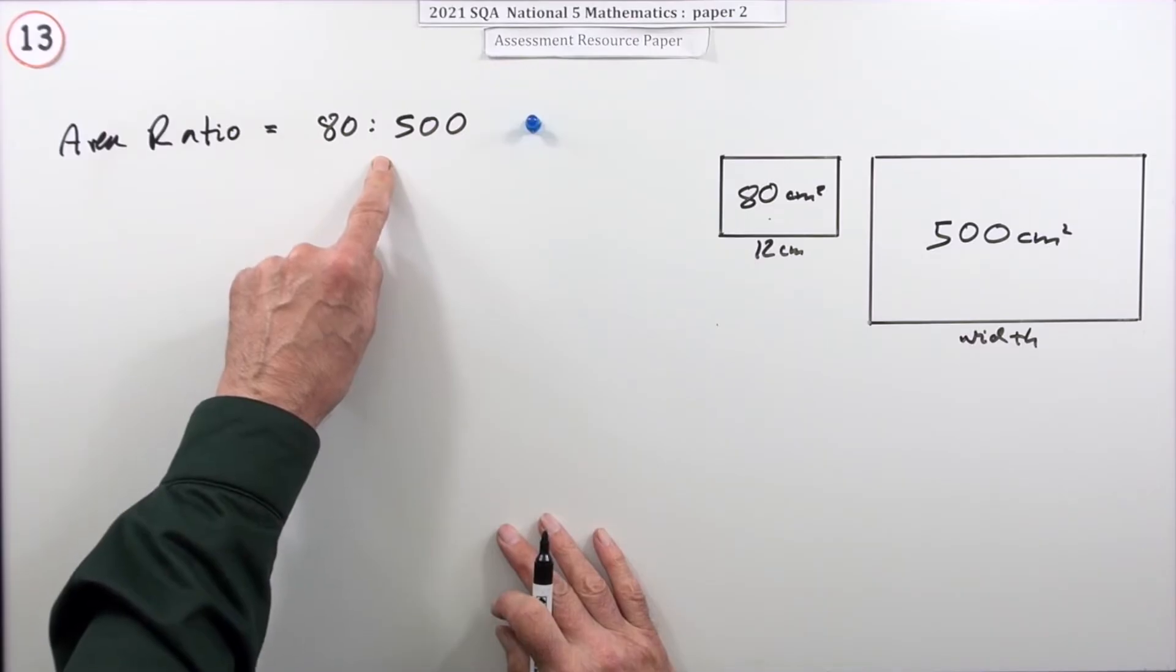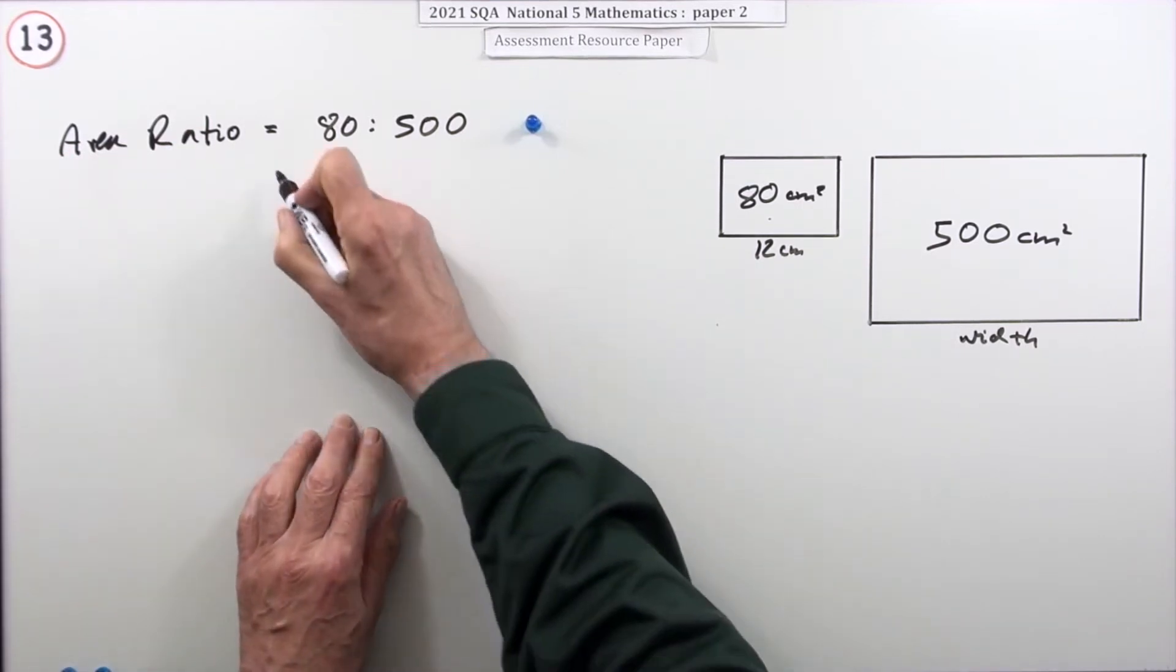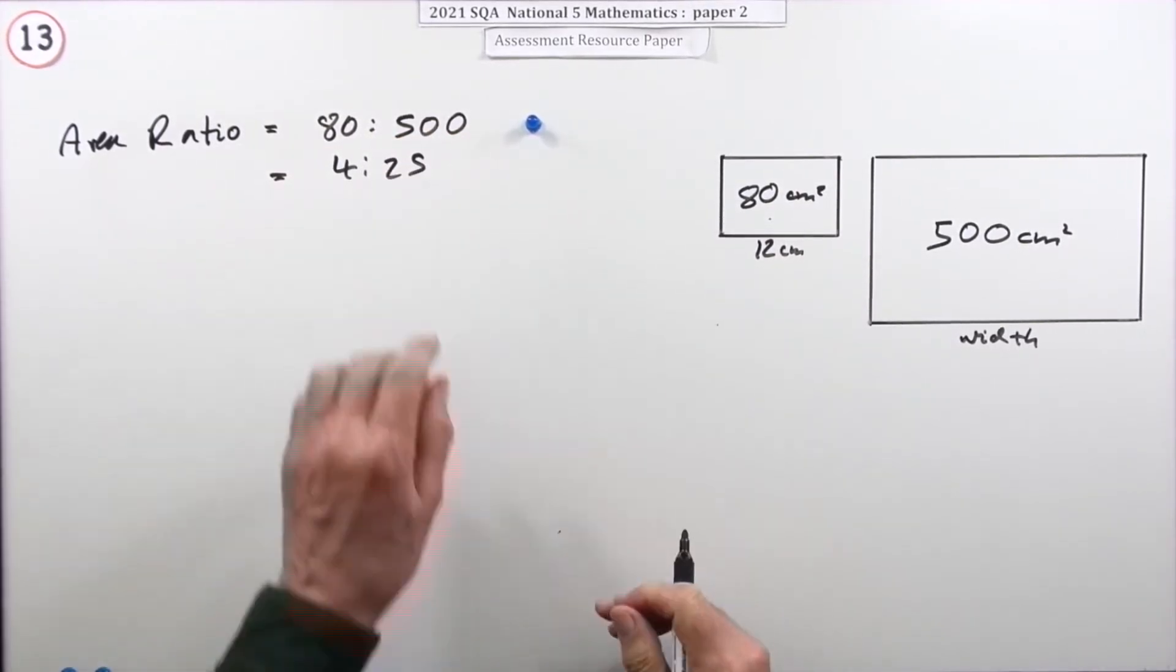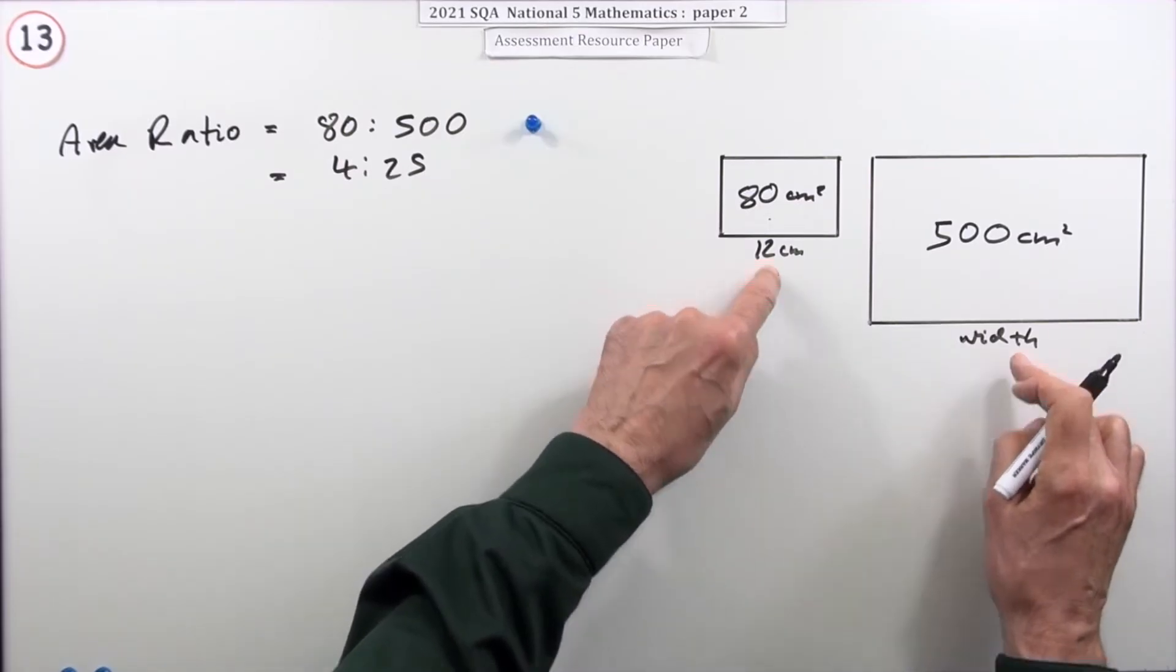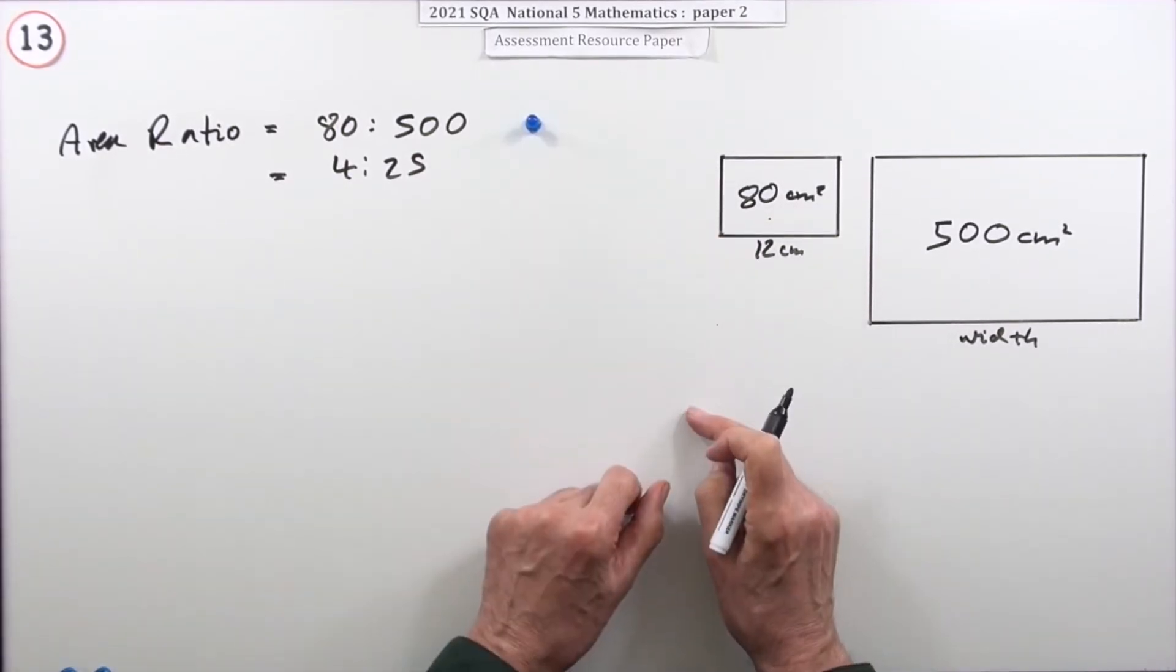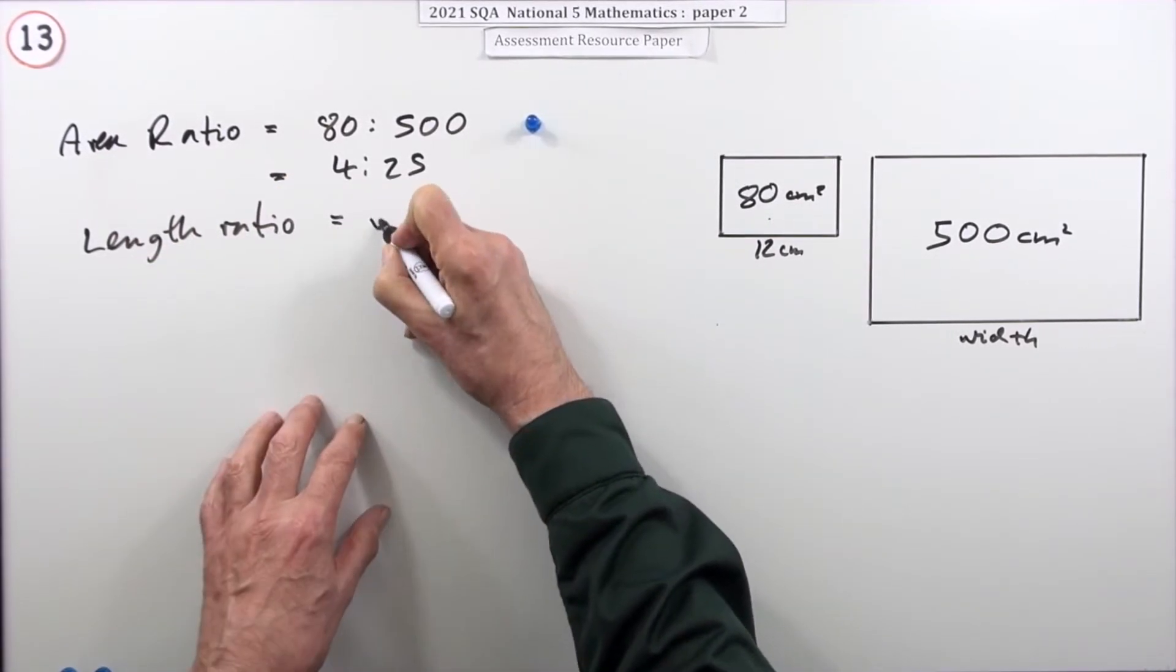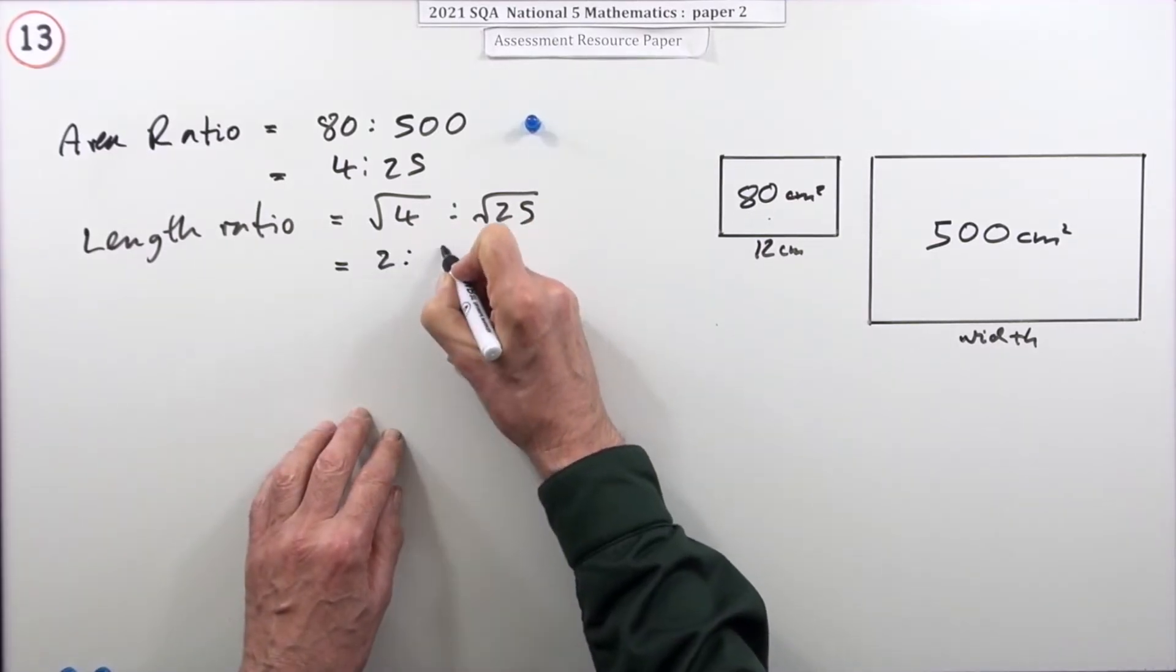At that point you could simplify it, but it is paper 2, so it is a calculator, so you could just leave all the numbers like that. But I would have knocked that down because it can come down quite a lot - divide by 10 makes it 8 and 50, then to 4 and 25, which is really very handy. There was no mark for doing that because it was a calculator paper. Now there's a connection between the area ratio and the length ratio. To get an area you multiply a length by a length, so the area will be multiplied by the square. From the area ratio you can get the length ratio by taking the square root. The length ratio would just be the square root of 4 to the square root of 25, which is 2 to 5.